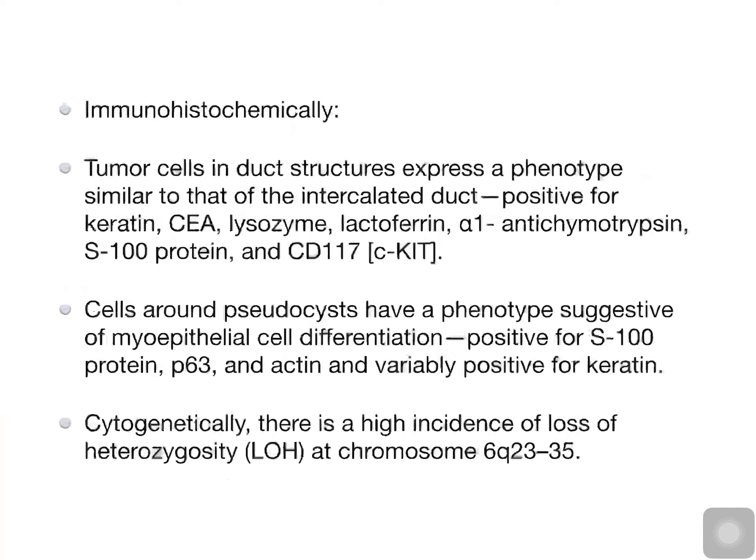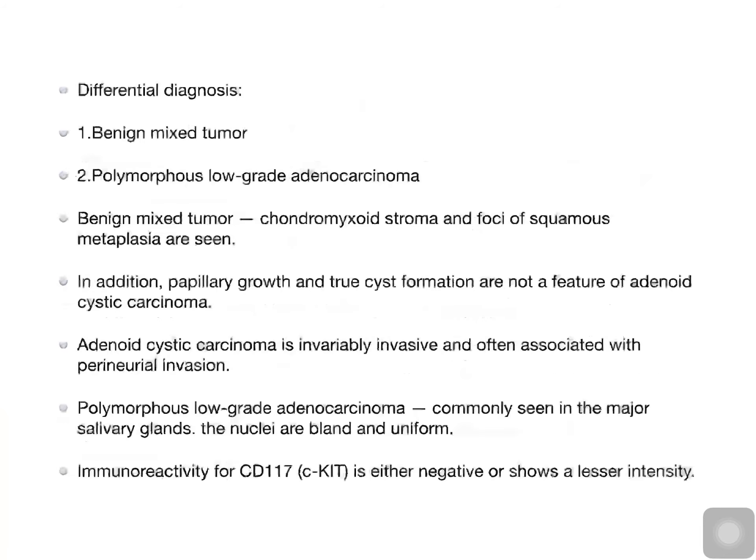Cytogenetically, there is a high incidence of loss of heterozygosity at chromosome 6Q23-35. For differential diagnosis, two entities can be considered: benign mixed tumour and polymorphous low-grade adenocarcinoma.